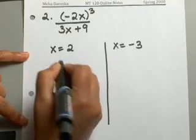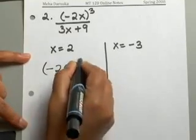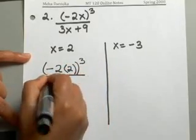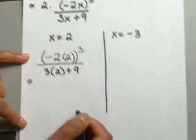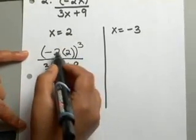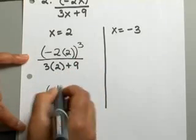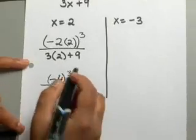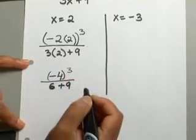Now, this time, you have negative 2 times X, and then you cube the whole thing, so be careful. That will be 3 times 2 plus 9. And let's see what that will give us. Negative 2 times 2 is negative 4, so that will give you negative 4 to the third power. And then in the denominator, you have 3 times 2, which is 6, and then 6 plus 9.